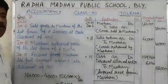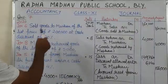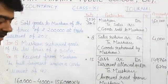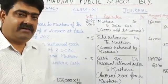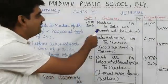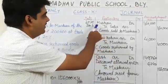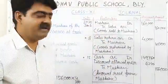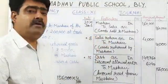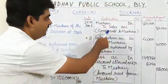I have taken one question: sold goods to Muskan at a list price of rupees 2 lakh at a trade discount of 20%. Always remember that trade discount will be deducted from the selling price. We are selling goods to Muskan, so Muskan is the receiver of goods. Debit the receiver — Muskan's account will be debited. Sale is our income, so we apply the nominal account rule: all incomes will be credited. So we will credit sales account.